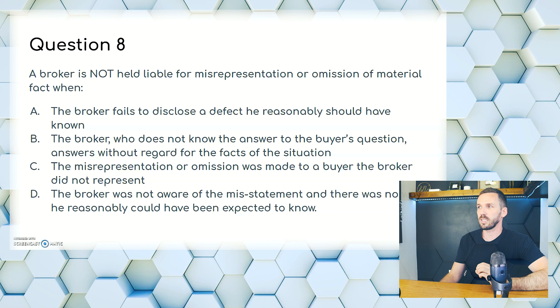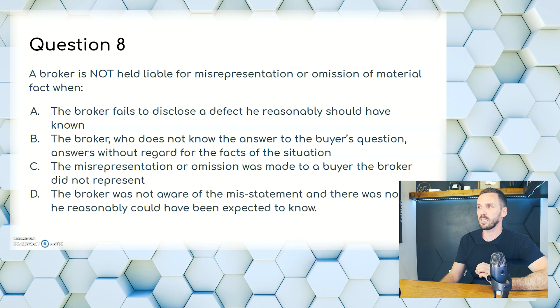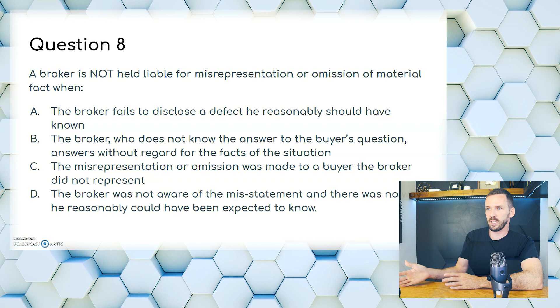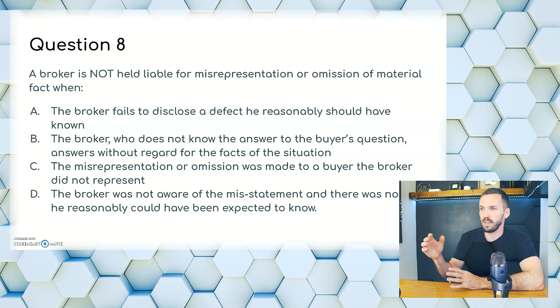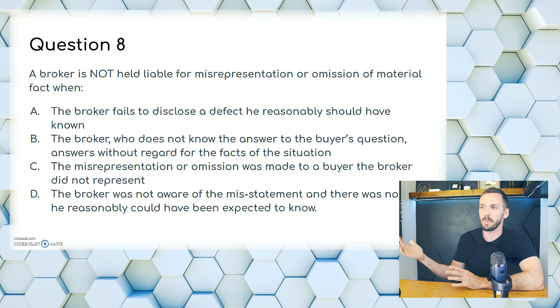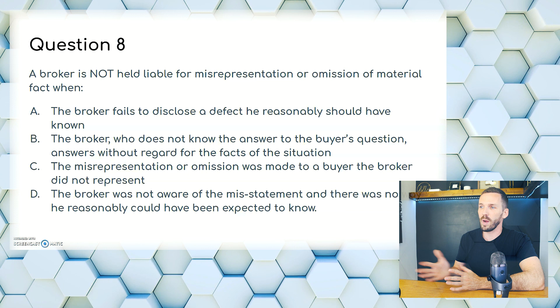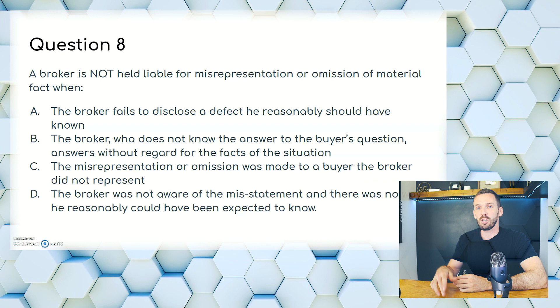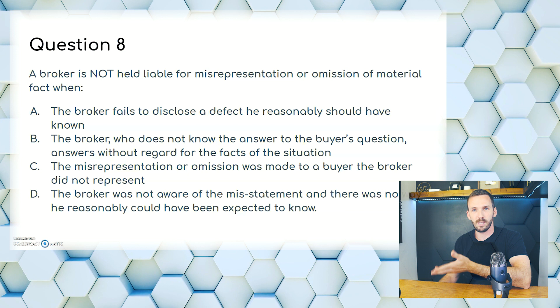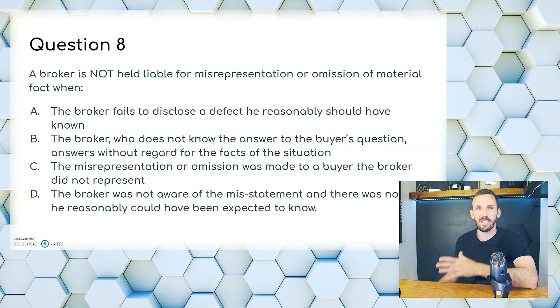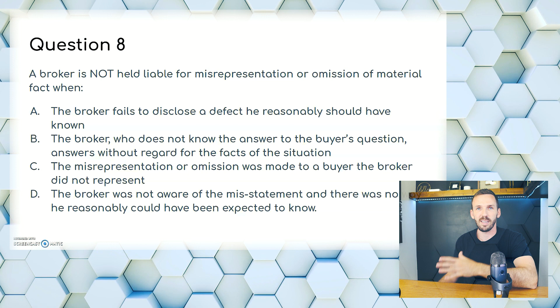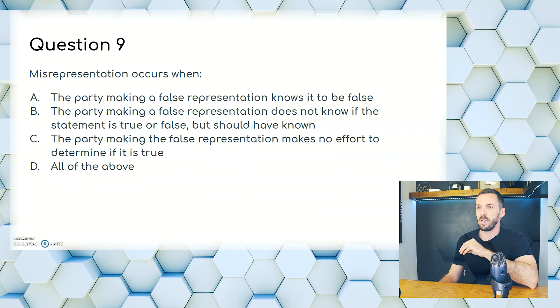Question 8. A broker is not held liable for misrepresentation or omission of material facts when: A, the broker fails to disclose a defect he reasonably should have known; B, the broker doesn't know the answer but answers anyway; C, the misrepresentation was made to a buyer the broker did not represent; or D, the broker was not aware and there was no way he reasonably could have been expected to know. Material facts are things you know or should know. A leak inside the walls is something you'd never know without visible evidence. The answer is D.